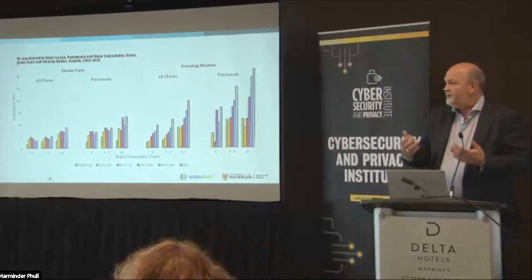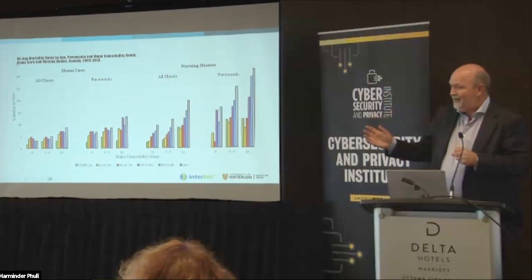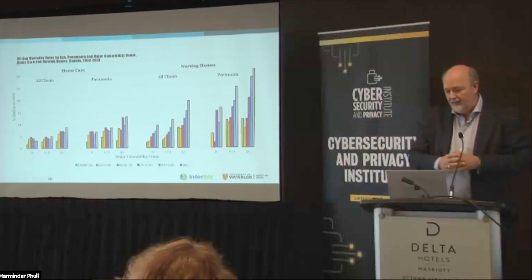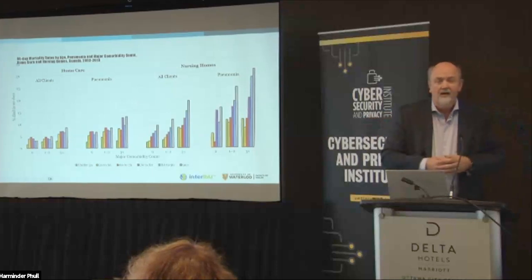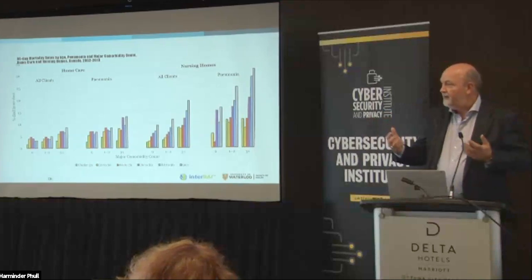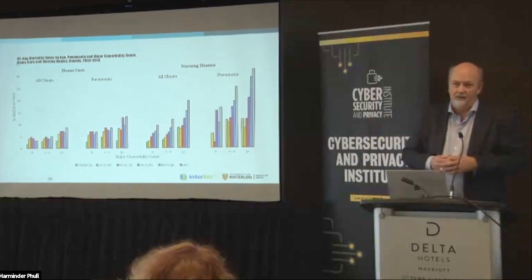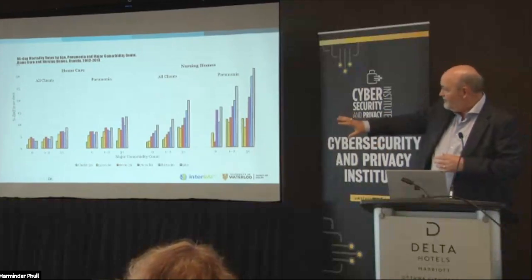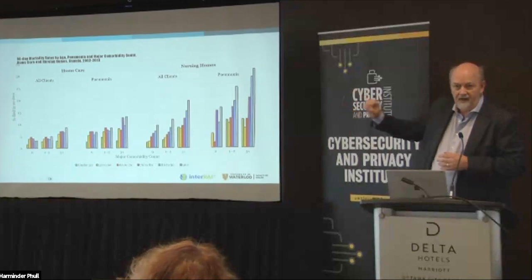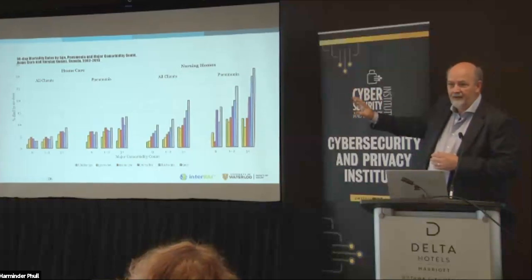We also had some data available from implementations of systems in the long-term care setting where we could take those measures of comorbidity and age. We could look at home care clients and nursing home residents in Canada. Nobody had COVID data because COVID wasn't really here yet, so we thought: what's a proxy for what COVID might be? We had information on pneumonia diagnosis, so we could do some simulation modeling of what pneumonia might look like in combination with age and comorbidity. Generally, as people are older in home care and nursing home settings, 90-day mortality goes up; if they have comorbidities, it goes up; if they have pneumonia, it goes up — and when you put them all together, it's bad.